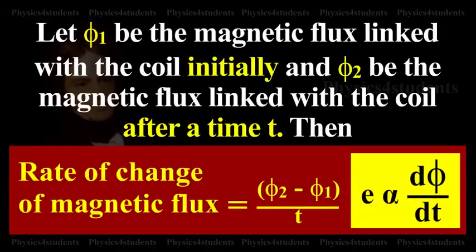Let phi1 be the magnetic flux linked with the coil initially and phi2 be the magnetic flux linked with the coil after a time T. Then, rate of change of magnetic flux is equal to phi2 minus phi1 divided by T.